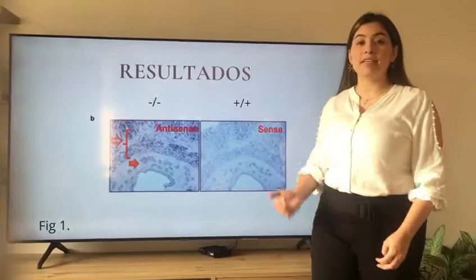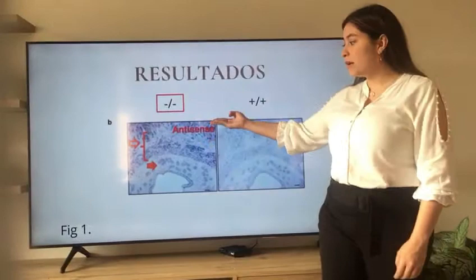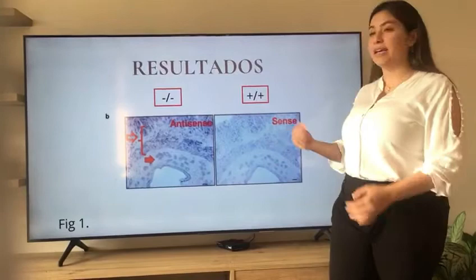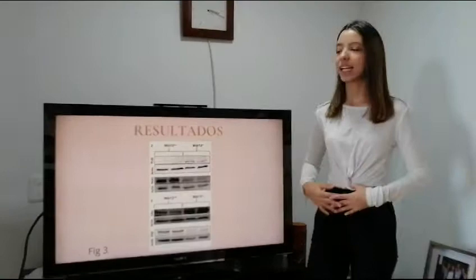In Figure B, we can see that in the knockout type — that is, minus-minus — there is a proliferation of cells in the glandular epithelium, a phenomenon characteristic of endometrial hyperplasia. In the wild type — that is, plus-plus — we observe a uterus with normal-appearing endometrium and glands.